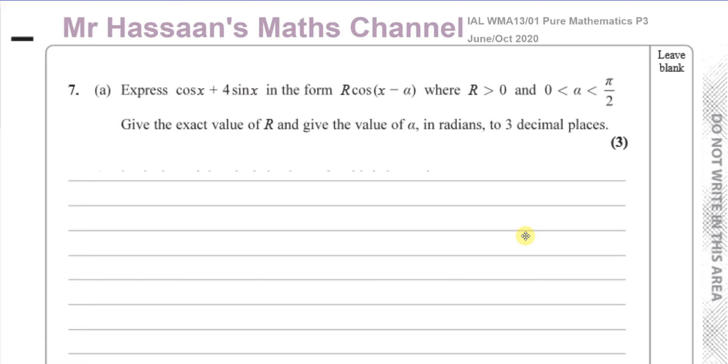Now I'm on to question number 7 from the June stroke October 2020 International A-Level Pure Mathematics P3 paper. Here we have a question about trig identities. In this question we are asked to express cosine x plus 4 sine x in the form r cosine of x minus alpha, where r is greater than zero and alpha is between zero and pi over two. We've got to give the exact value of r and the value of alpha in radians to three decimal places.